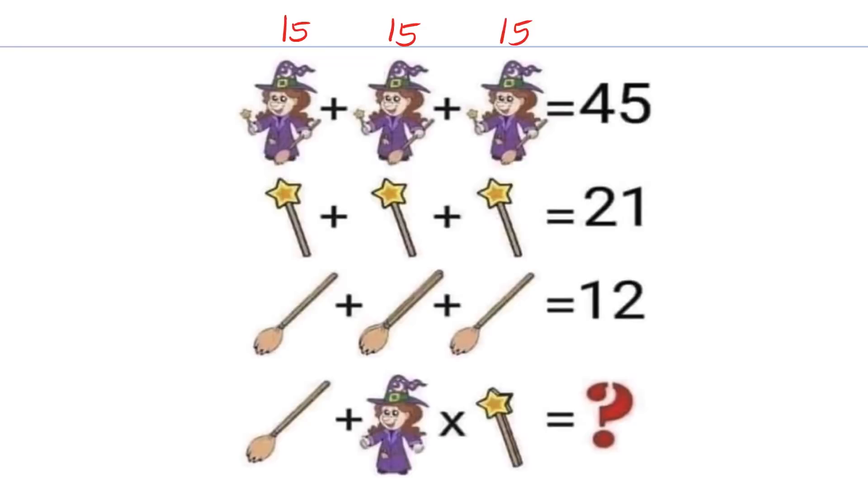For line 2, we have three wands added up together to 21. So this means that each wand is 7.